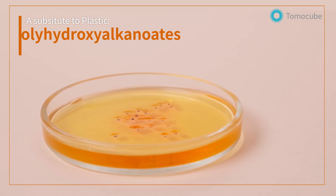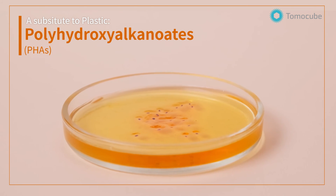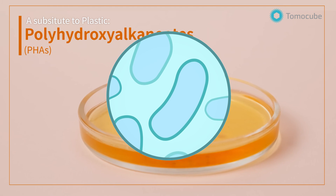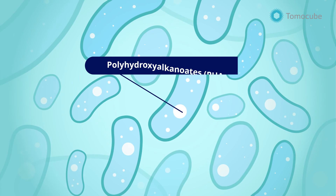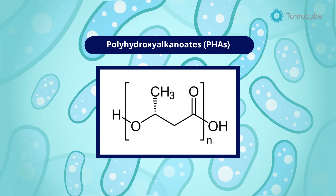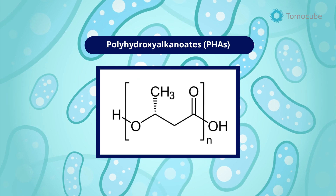PHA, a substitute to plastics, are linear polyesters produced by bacterial fermentation of sugar or lipids. They are biodegradable and are used in the production of bioplastics.